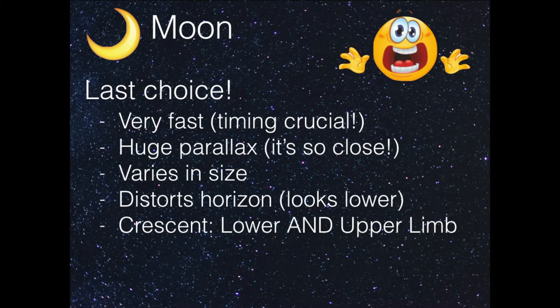First of all, it moves very fast, so timing is crucial — every second counts and you have to do your calculations very correctly. It has a huge parallax because it's so close, so we have to correct for that as well. It varies in size; sometimes it looks bigger, sometimes smaller. And it distorts the horizon — the moon makes it so the horizon looks further down, lower than it is.